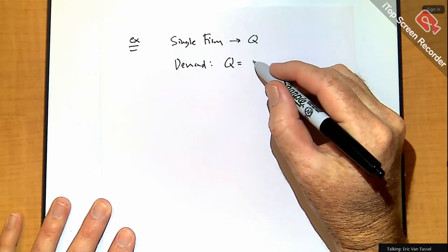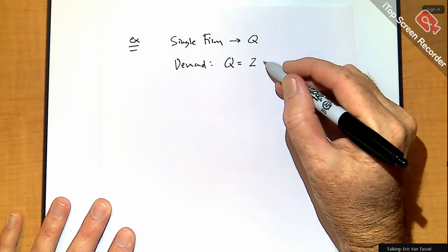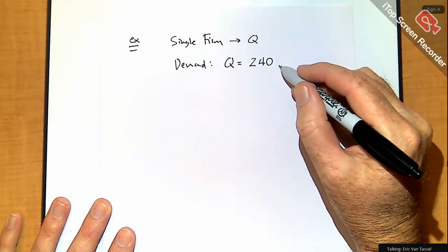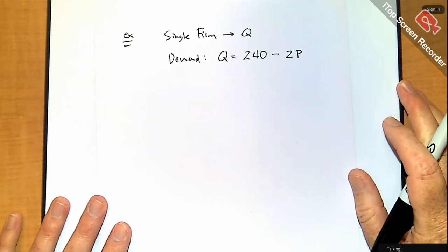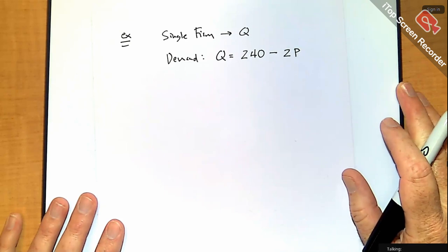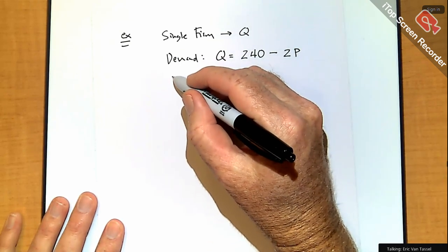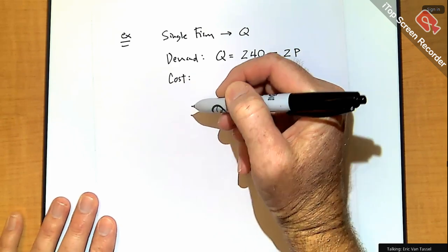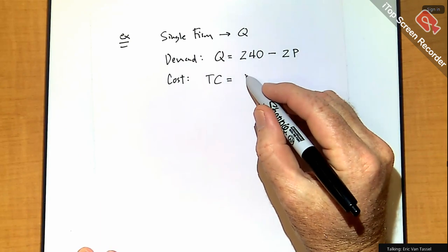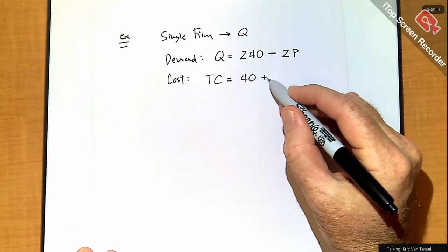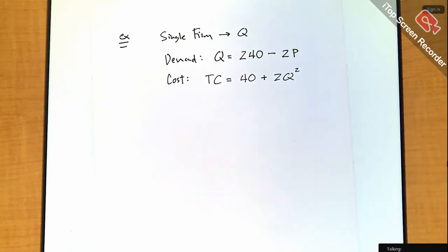We'll have a demand curve for good Q, something like: quantity demanded = 240 minus 2 times the price. That's my linear demand curve — it summarizes customer behavior. For the firm, we also have a cost of production given as: total cost = 40 + 2Q². So there's a fixed cost of 40 and a variable cost of 2Q². The firm faces this demand curve.